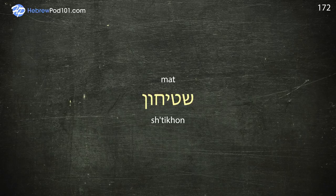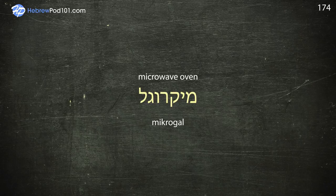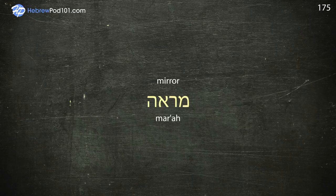Mattress — Mizran. Microwave oven — Microgal. Mirror — Mara. Mixer — Merbil. Mop — Shataf.